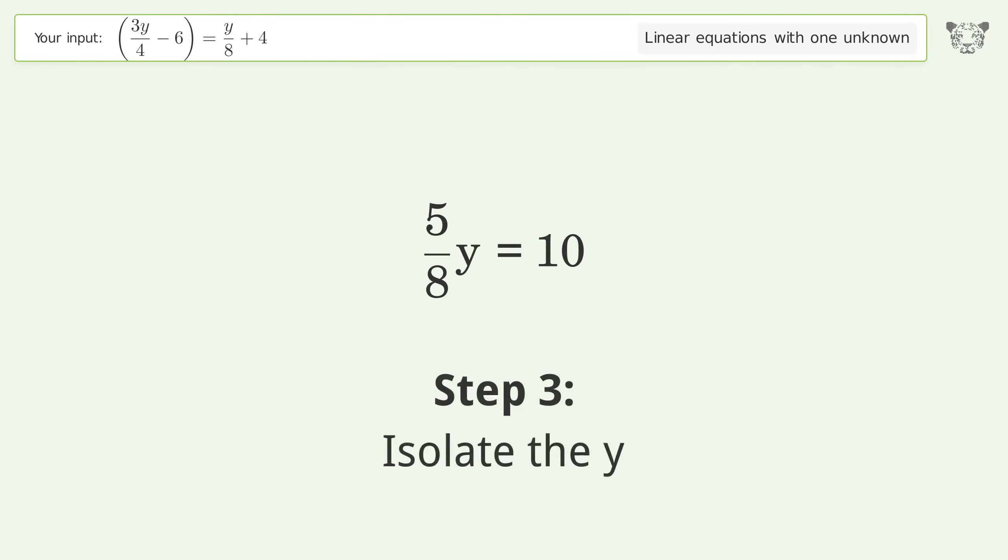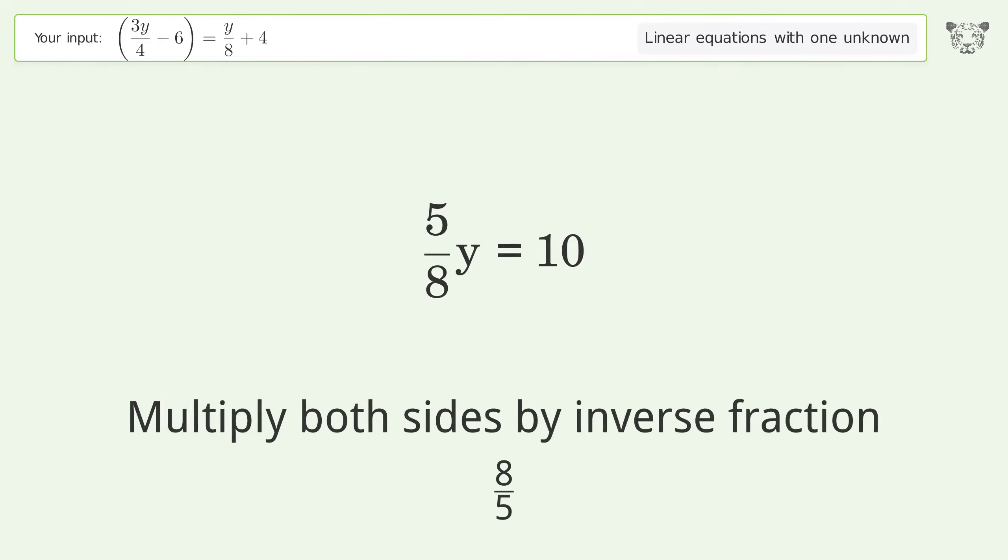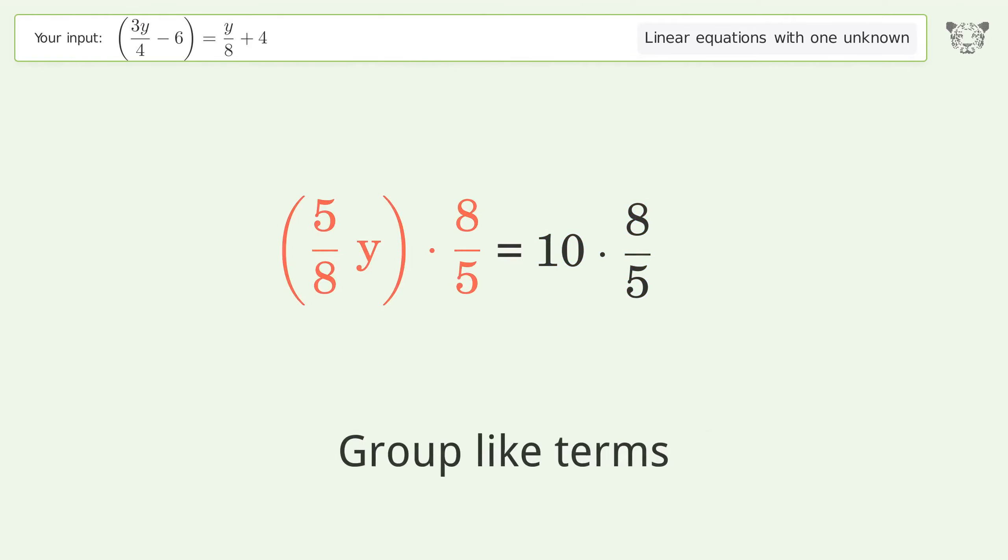Isolate the y. Multiply both sides by inverse fraction 8 over 5. Group like terms.